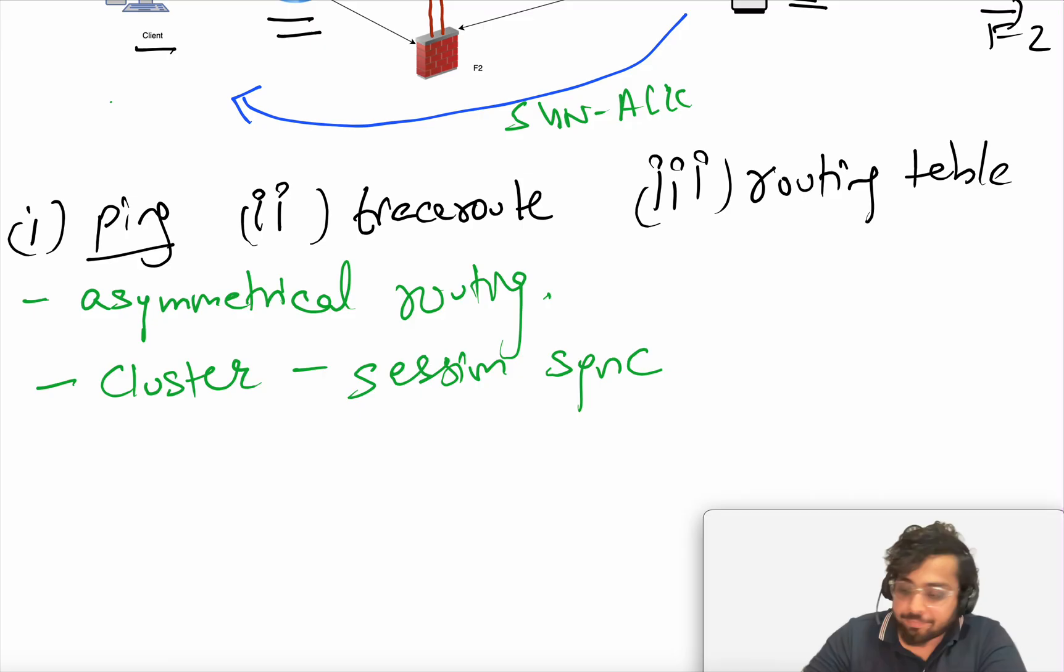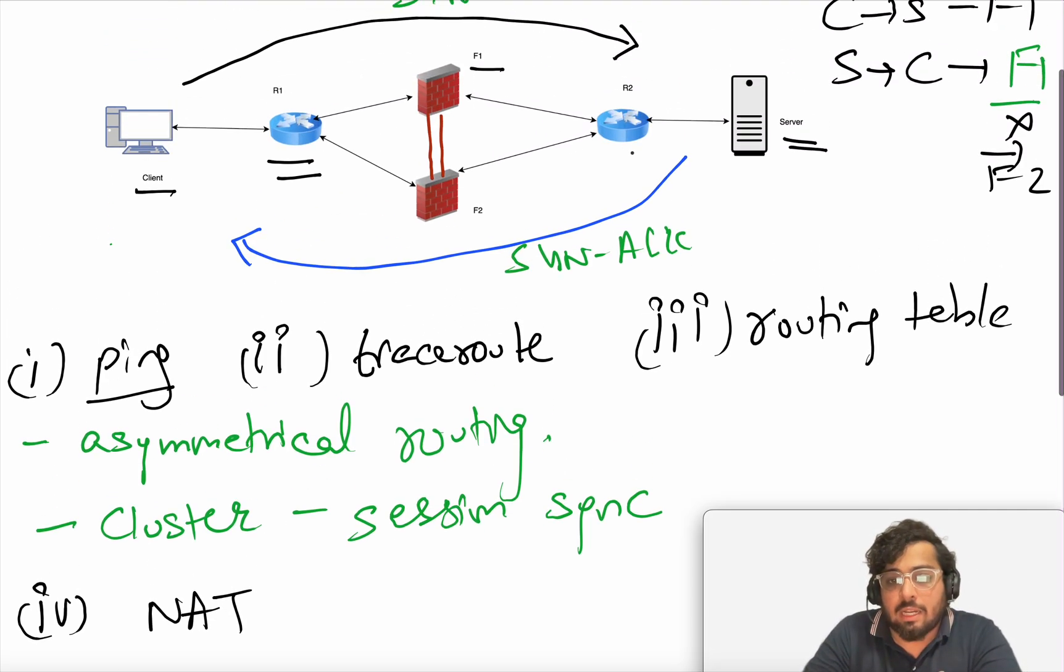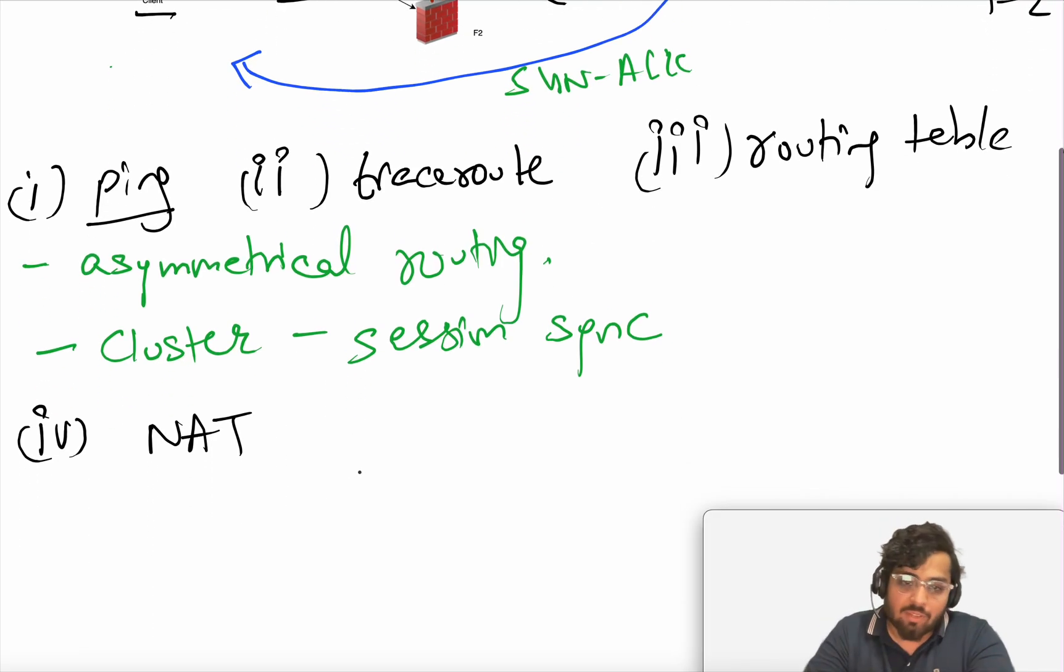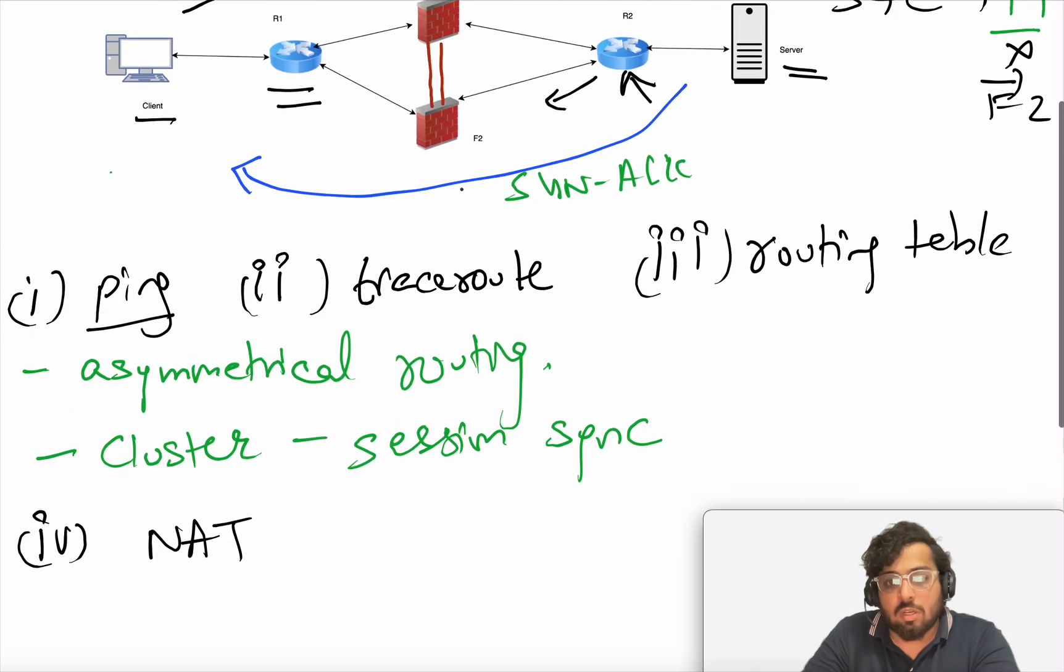But then there are different settings on different particular vendors that you will need to turn on. And again, another thing you will check here in the troubleshooting part is NAT. If there is any NATing happening on this particular firewall. So when the server is responding back because of probable NAT that you have configured, the traffic might be going through here. So since we have deducted that it's asymmetrical routing, you don't need to worry about NAT. But this is again a very good point for the interview. You can say that NAT could be one of the causes.